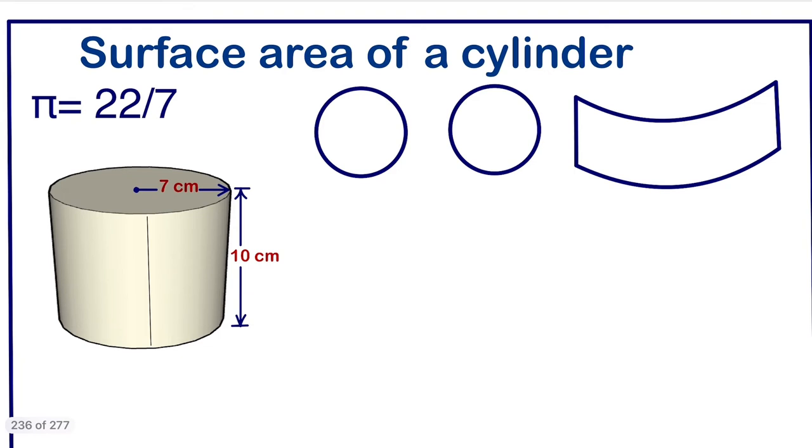In order to calculate the surface area of a cylinder, no need to memorize the formula. Ask yourself, a cylinder has how many circles? We have two circles. What is the area of a circle? The area of a circle is πr². So here also we are going to have πr².